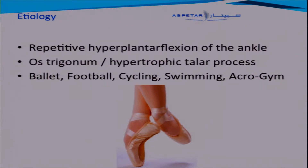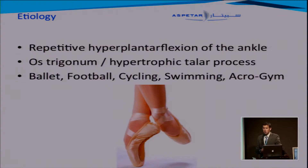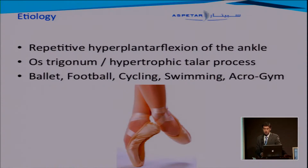The etiology of posterior impingement is due to repetitive hyperplantar flexion of the ankle. When considered a bony lesion, it involves an os trigonum or a hypertrophic talar process. We mainly encounter it in ballet, football, cycling, swimming, and acrogym — all types of sports showing repetitive hyperplantar flexion moments in the ankle.